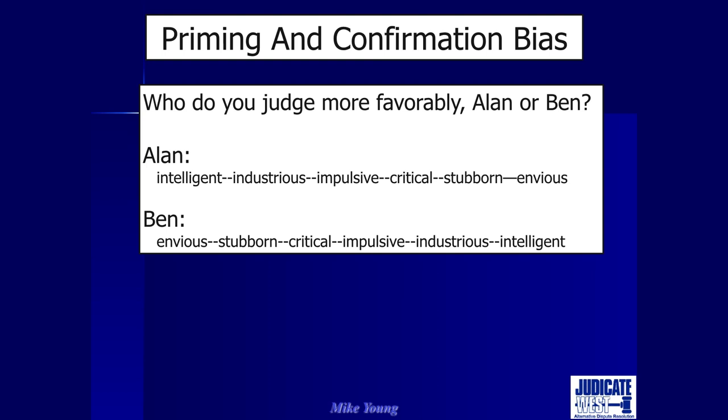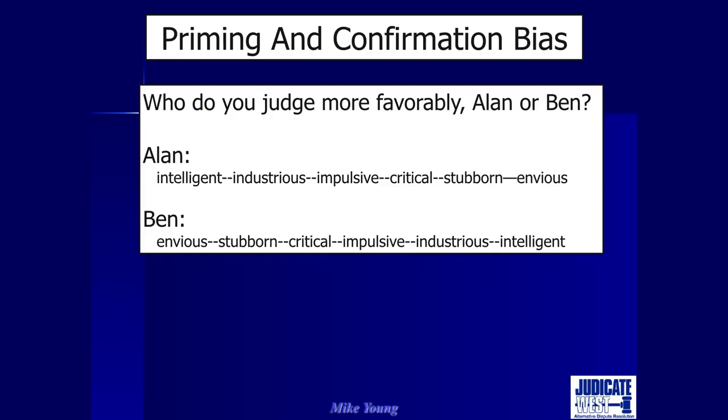With confirmation bias, the things that follow are going to be interpreted consistent with your first impression. He's industrious, he's impulsive — you get to 'critical,' which is ambiguous. In Alan's case, you probably think he's critical like an art critic — objective, giving a critical analysis. But Ben starts with 'envious' and 'stubborn,' so I don't like Ben. When I get to 'critical,' I think he's probably telling you what to do all the time, judgmental. This is the power of both priming and confirmation bias — those first impressions matter because they impact all the impressions and interpretations that come later, particularly of things that are ambiguous, like the word 'critical.'